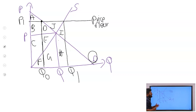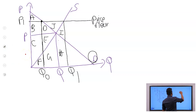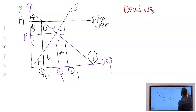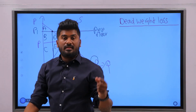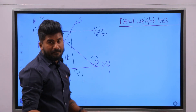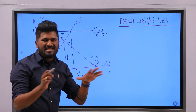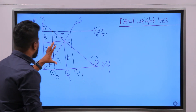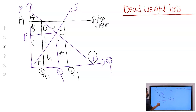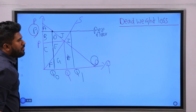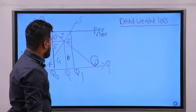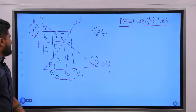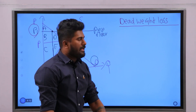Now we will talk about dead weight loss. Dead weight loss is created when the economy produces an inefficient quantity — at the inefficient quantity, MC is not equal to MB. This is an excess supply purchasing situation. When the government imposes a price floor, quantity supplied is higher than quantity demanded. This excess supply is going to be purchased by the government at this price.